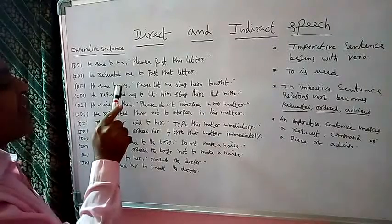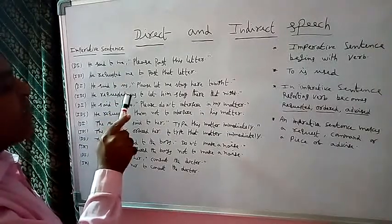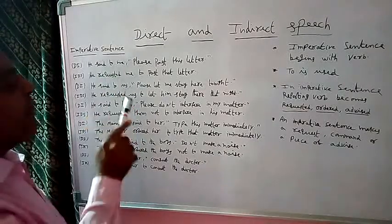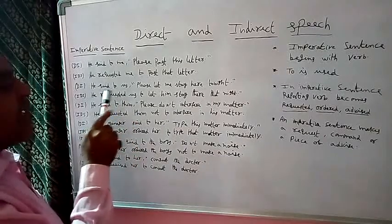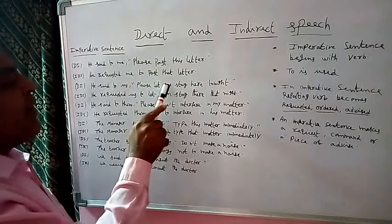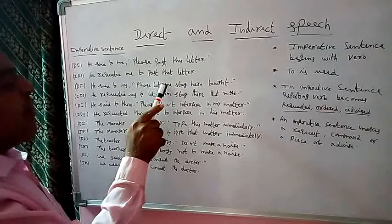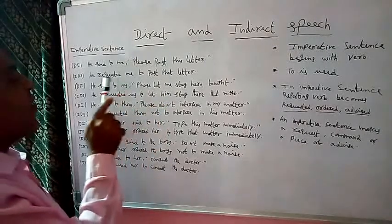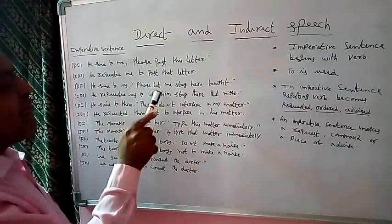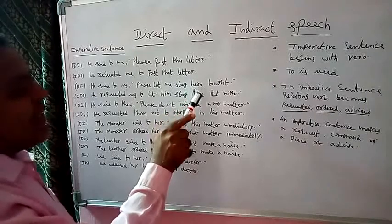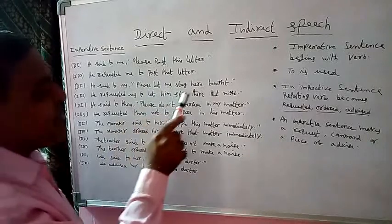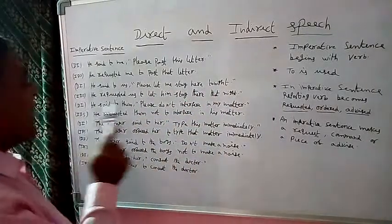The object is 'us', and the same object must be written in indirect speech. 'To' is used instead of a comma in an imperative sentence. Don't write 'please'. The pronoun of the first person 'I' is changed according to the subject — subject 'he', object 'him'. So 'me' is changed to 'him'. 'Here' changes to 'there', and 'tonight' changes to 'that night'. The indirect speech is: He requested us to let him stay there that night.